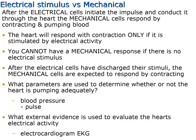After the electrical cells have initiated and conducted the impulse through the heart, the mechanical cells respond by contracting and pumping blood. The heart will respond with contraction only if it is stimulated by electrical activity — you cannot have a mechanical response if there is no electrical stimulus. The parameters used to determine whether the heart is pumping adequately are blood pressure and pulse. The external evidence used to evaluate the heart's electrical activity is the EKG or electrocardiogram.